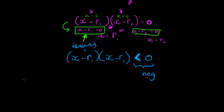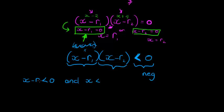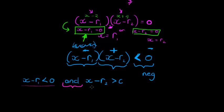That means either (x − r1) is negative and (x − r2) must be positive — because if one factor is negative, the other has to be positive to get a negative product. Notice very importantly: I'm using 'and'. So (x − r1) < 0 AND (x − r2) > 0.